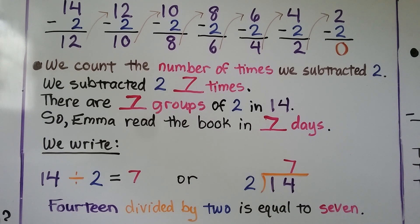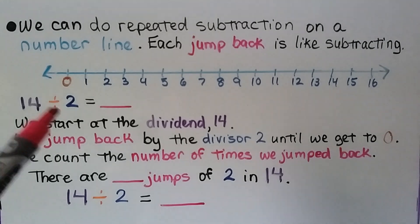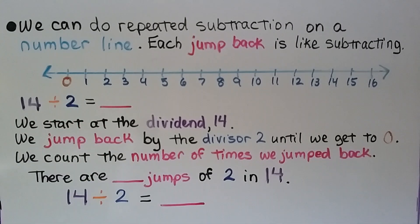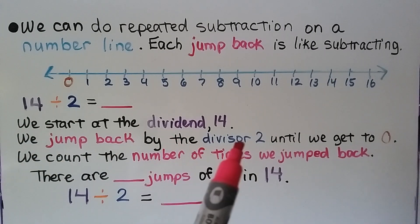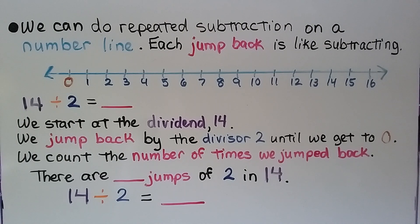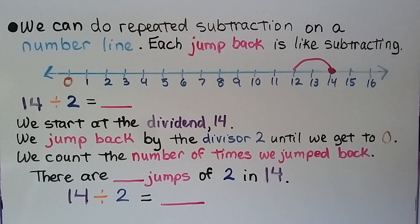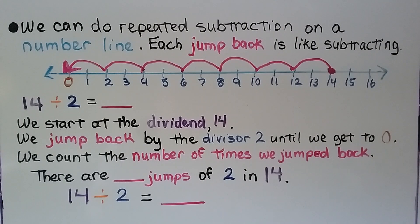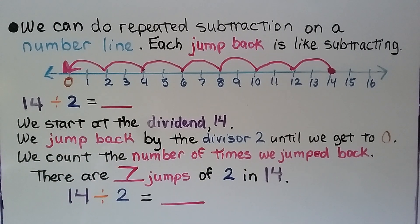So 14 divided by 2 is equal to 7. We can also do repeated subtraction on a number line, where each jump back is like subtracting. For 14 divided by 2, we start at the dividend 14 right here on the number line and jump back by the divisor 2 until we get to 0. We count the number of jumps: 1, 2, 3, 4, 5, 6, 7 jumps. So there are 7 jumps of 2 in 14. 14 divided by 2 is equal to 7.